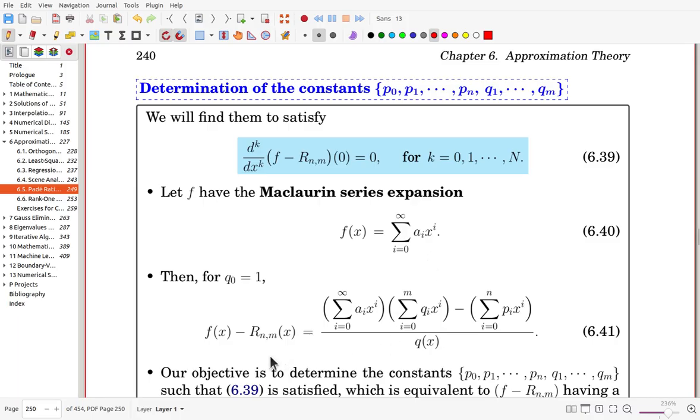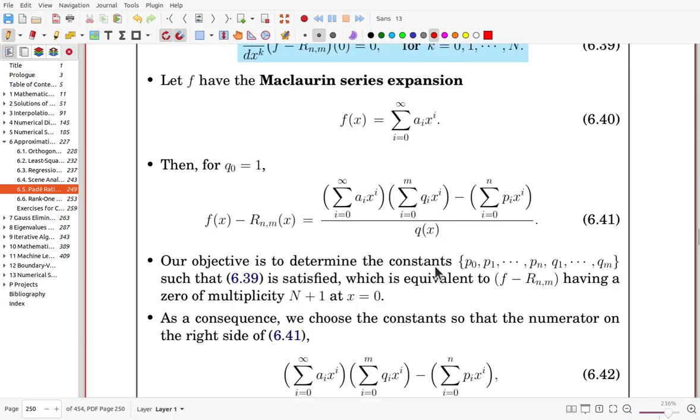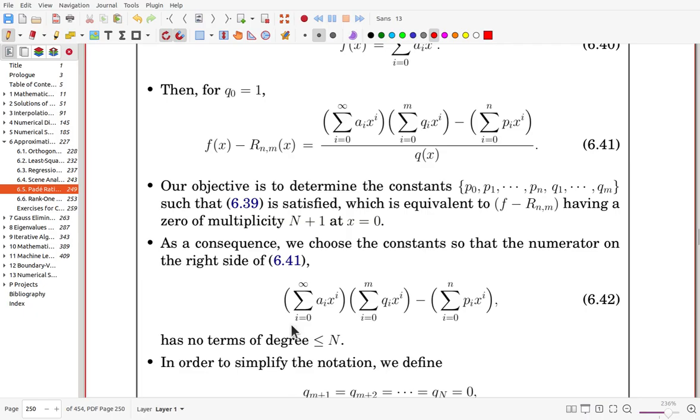Now with that, here f is this Maclaurin expansion and r is p over q so that by combining we can reach at this one.